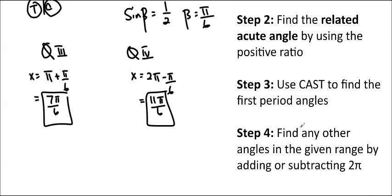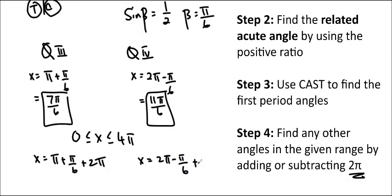Now, if we wanted to find any more angles in the range, so if I change the answer, okay, now we're going to find 0 less than or equal to x less than or equal to 4 pi, then we can just add 2 pi's to the answer. So x equals pi plus pi over 6 plus 2 pi. And x equals 2 pi minus pi over 6 plus 2 pi. And we'd find more answers that way. So you can do it this way as well if we have an expanded set of answers that we need to find. So 23 pi over 6. And that's how you do it.